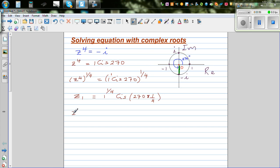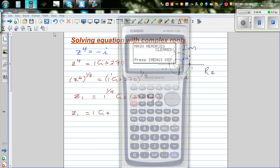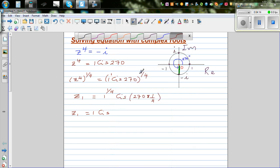So you can say z1, 1 raised to 1 quarter is 1. So this is 1 cis 270 divided by 4. Let me use my calculator. That's 270 divided by 4, which is 67.5. So the first root is 1 cis 67.5 degrees.